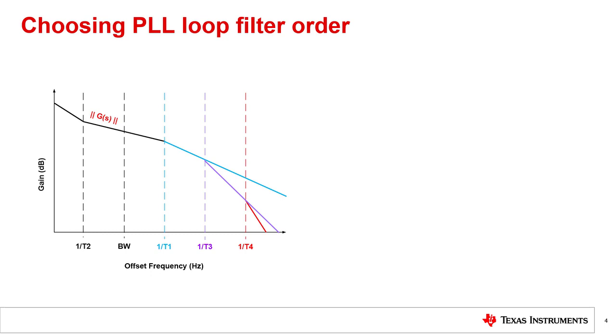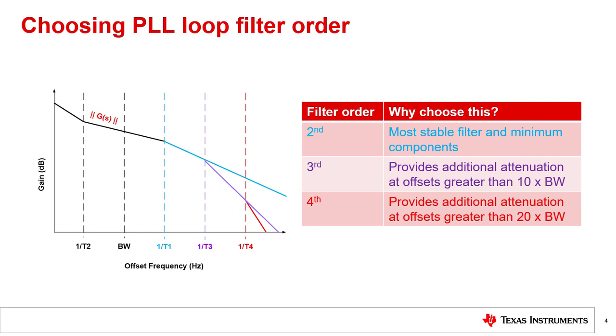The graph illustrates how the gain of the open loop transfer function changes with the loop filter order. The blue line denotes the gain of the second order filter. The purple line corresponds to a third order loop filter, and the red line denotes the gain of a fourth order loop filter. As the order of the loop filter increases, the number of poles increase. A fourth order loop filter transfer function provides more attenuation at high frequency offsets than a third order transfer function. This is a beneficial feature to attenuate the magnitude of the spurs.